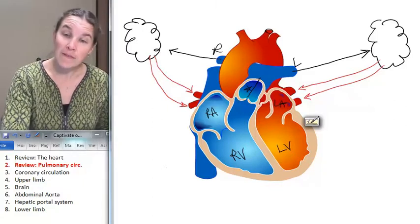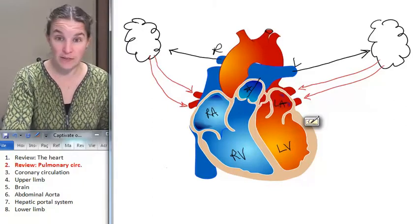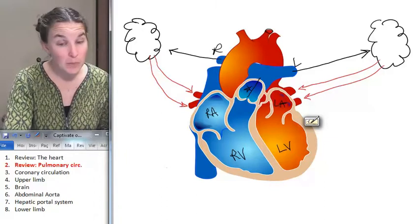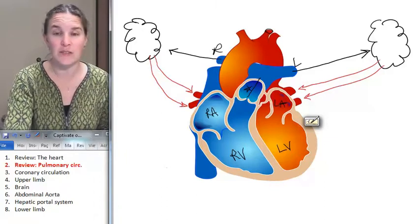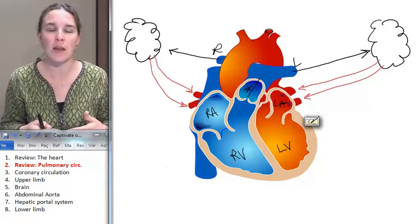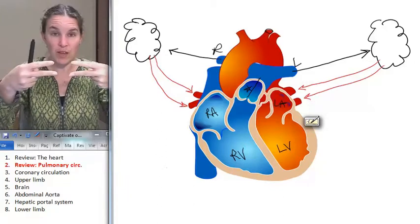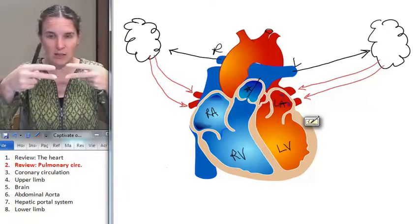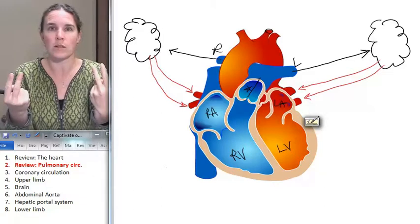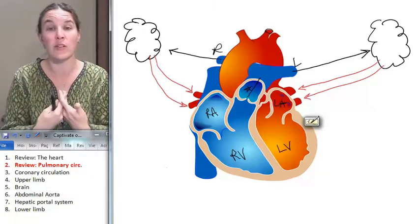The left pulmonary veins enter the left atrium. The right pulmonary veins also enter the left atrium. Now, most of the time, those two pulmonary veins from each side empty into the left atrium. And so how many holes do you have bringing blood into the left atrium? Most of the time, you have four.